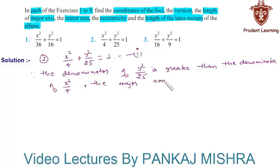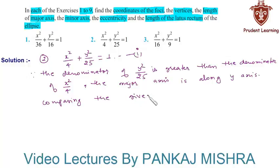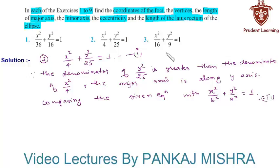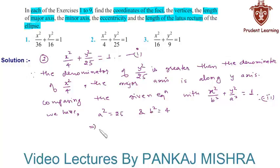On comparing the given equation with the standard form x² / b² + y² / a² = 1 — which is the equation of an ellipse whose major axis is along the y-axis — we see that a² = 25 and b² = 4.